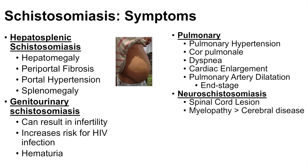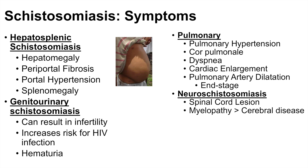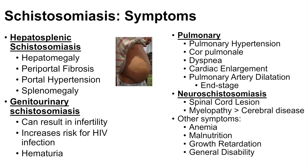Another system that can be affected is the nervous system, leading to what we call neuroschistosomiasis. Due to the parasite burden, it can lead to spinal cord lesions, and it typically causes myelopathy more so than cerebral disease, but cerebral symptoms can still occur. Other symptoms include anemia, malnutrition, growth retardation, and general disability.